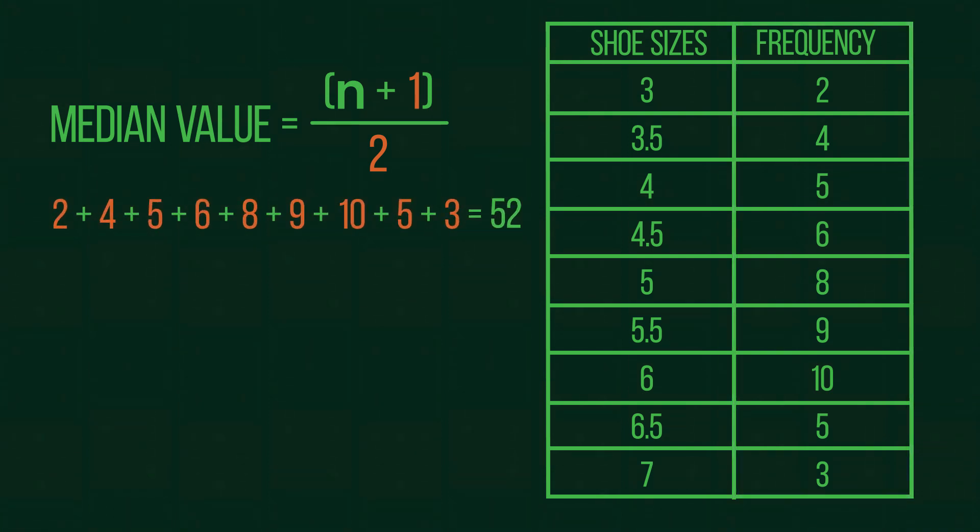To find the median value, we need to input this value into the median equation. What position would this give us? Pause and have a go. Substituting 52 in as the value n gives 53 divided by 2. The answer to which is 26.5. This means that the 26.5 position is the median.